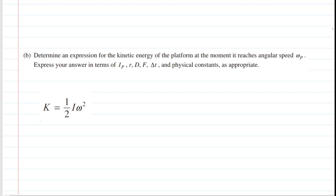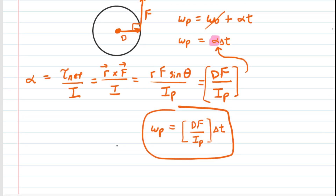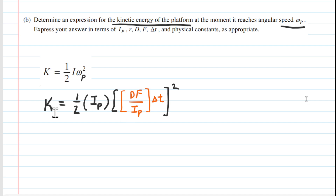Part B asks us to determine an expression for the kinetic energy of the platform at the moment it reaches angular speed omega P. The platform is rotating, so the form of kinetic energy is rotational kinetic energy, expressed by the formula from the reference tables. We plug in the given values and the expression we developed earlier for omega P, adding the subscript for clarity. The rotational inertia is I sub P, and for omega P we substitute the expression found in Part A.